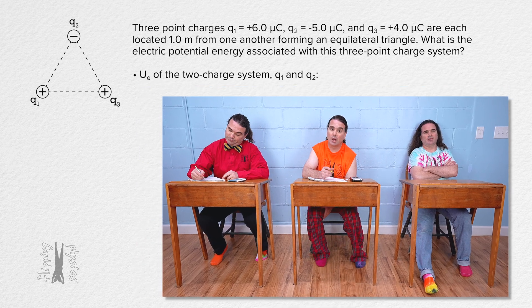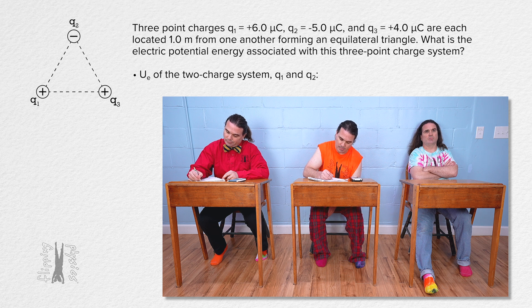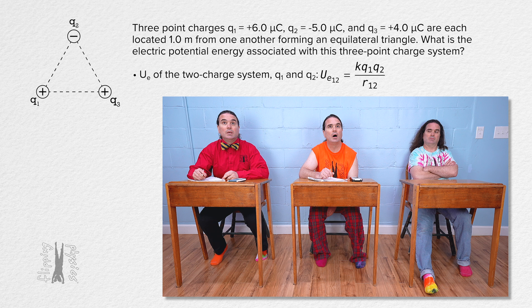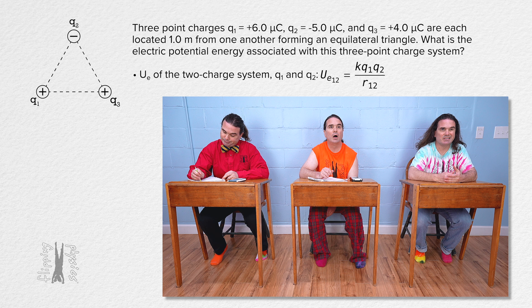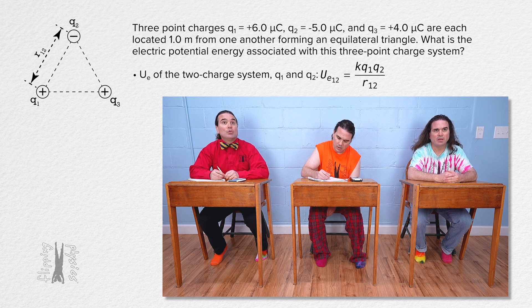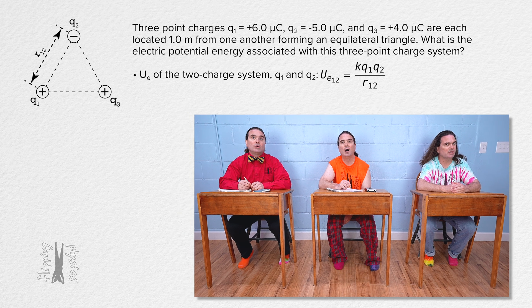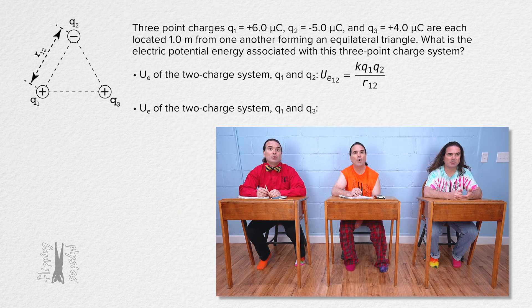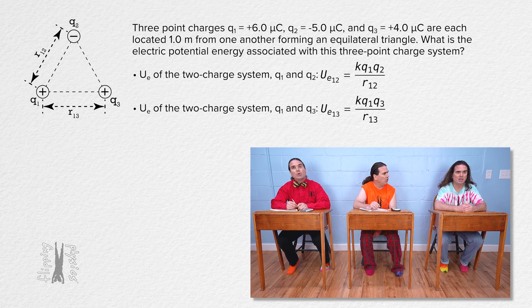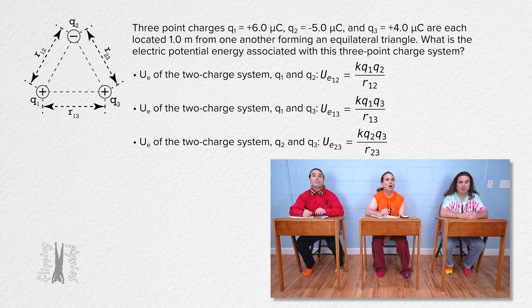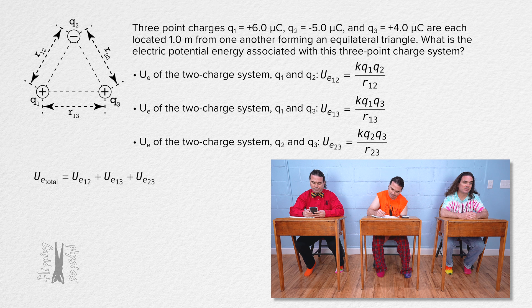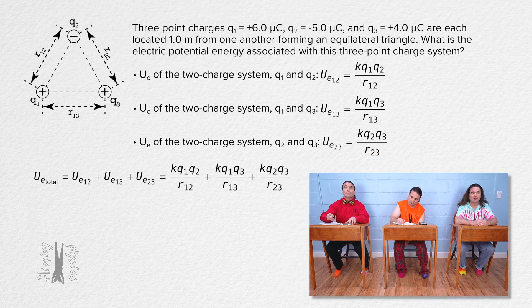We know the electric potential energy of a 2-charge system consisting of charge 1 and charge 2 equals the Coulomb constant times charge 1 times charge 2, all divided by the distance between charges 1 and 2. The same equation with different subscripts applies for the charge 1–charge 3 system and the charge 2–charge 3 system. Since energy is a scalar, to get the total electric potential energy of the 3-charge system we simply add all three electric potential energies together.